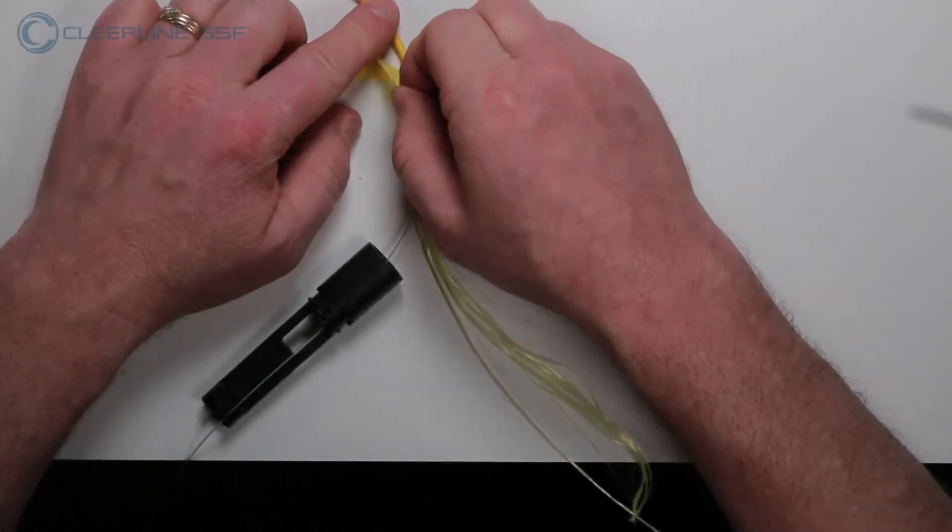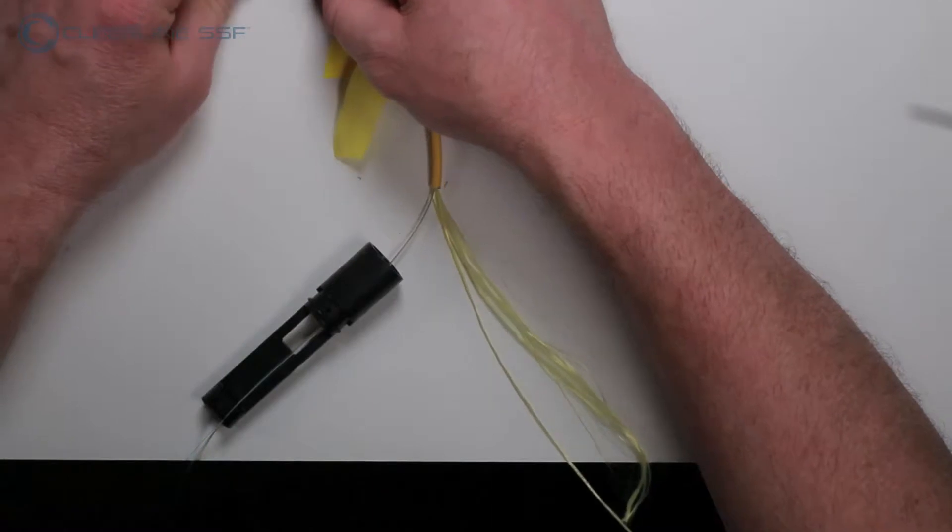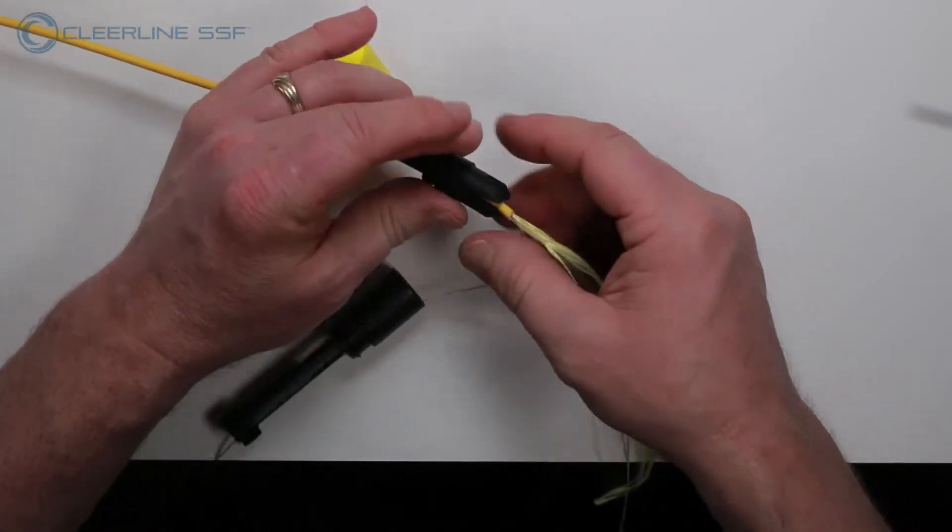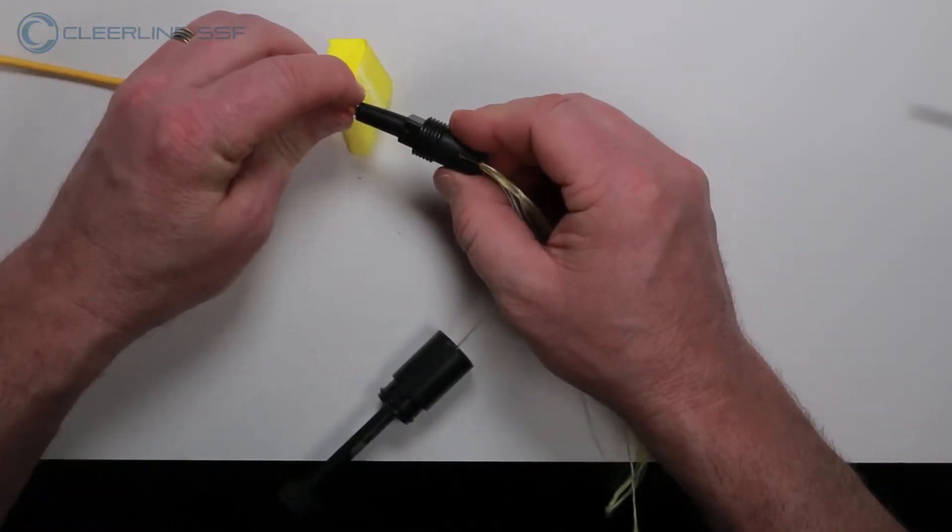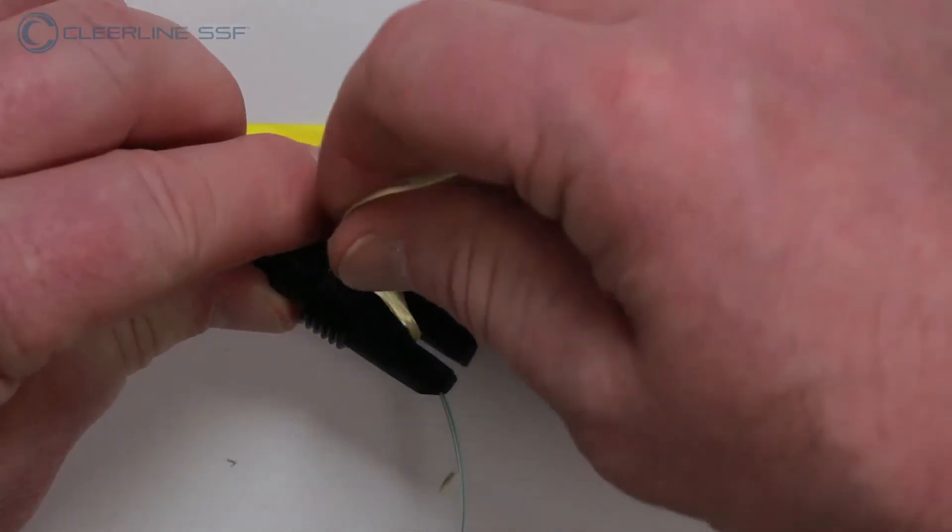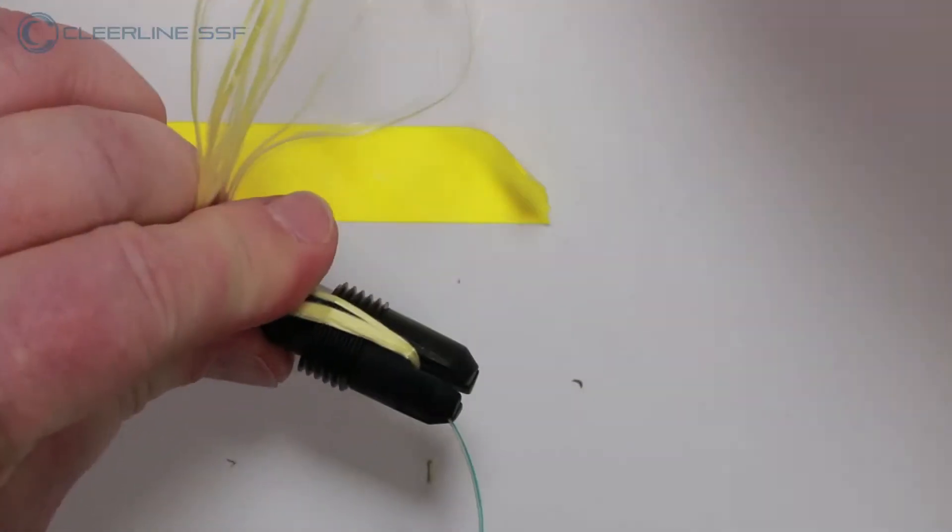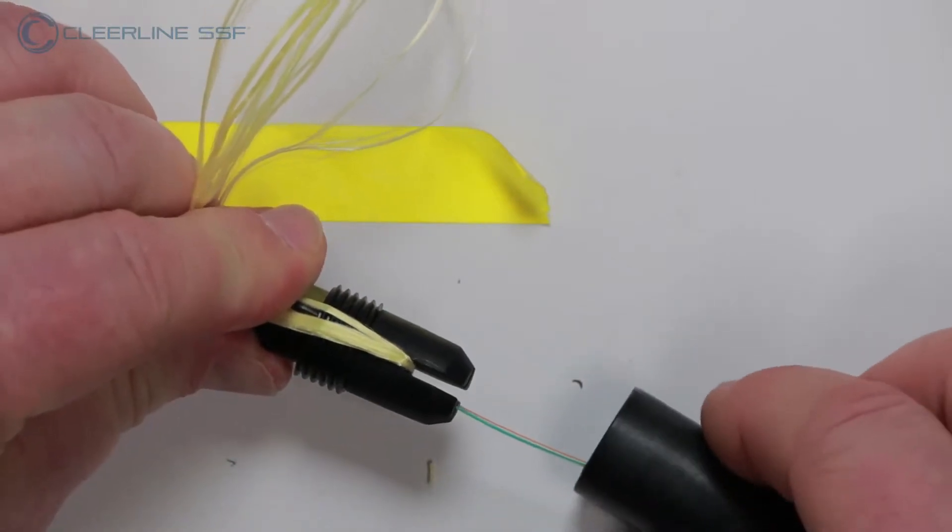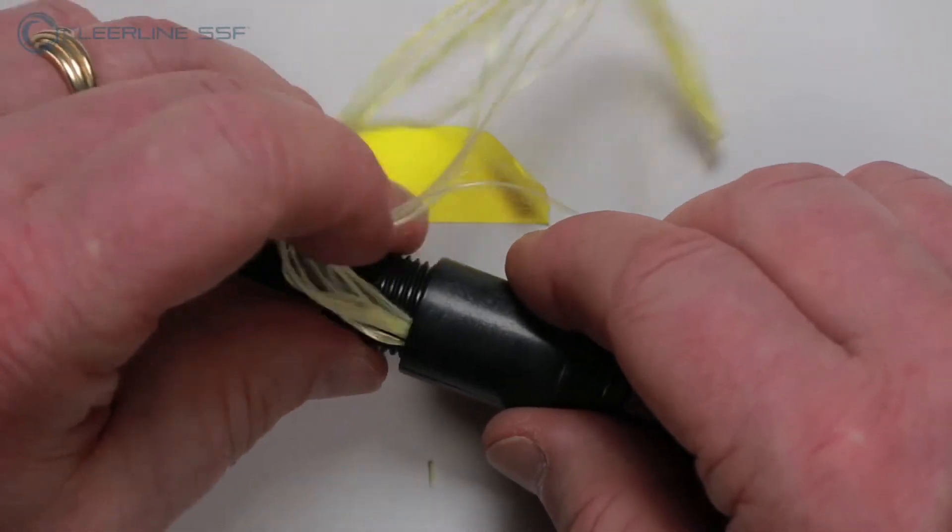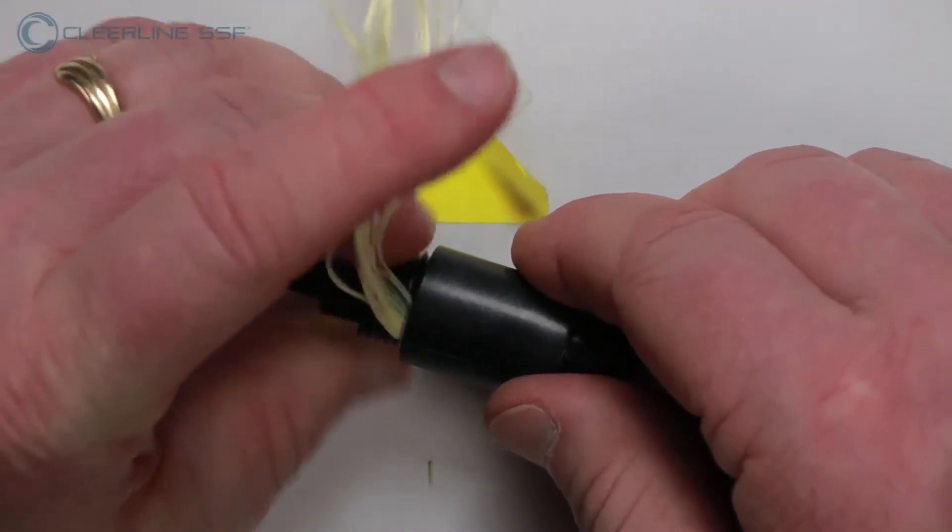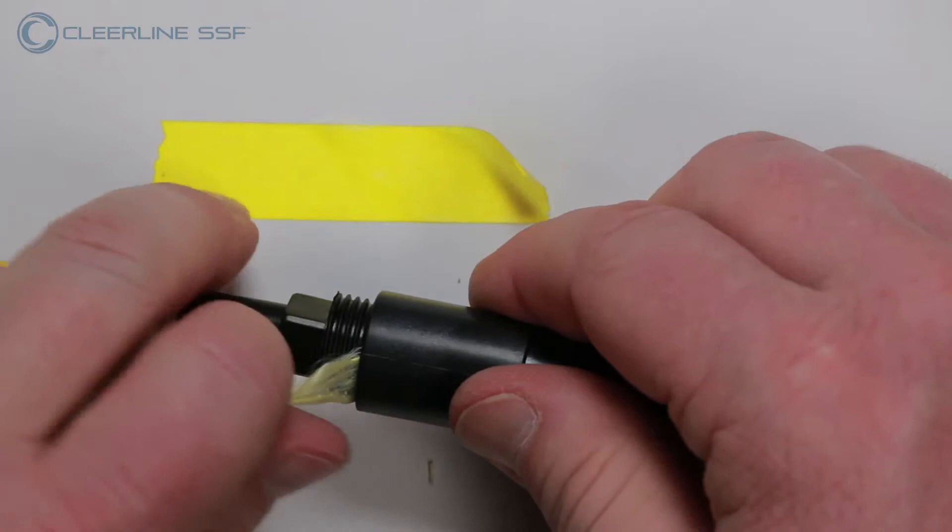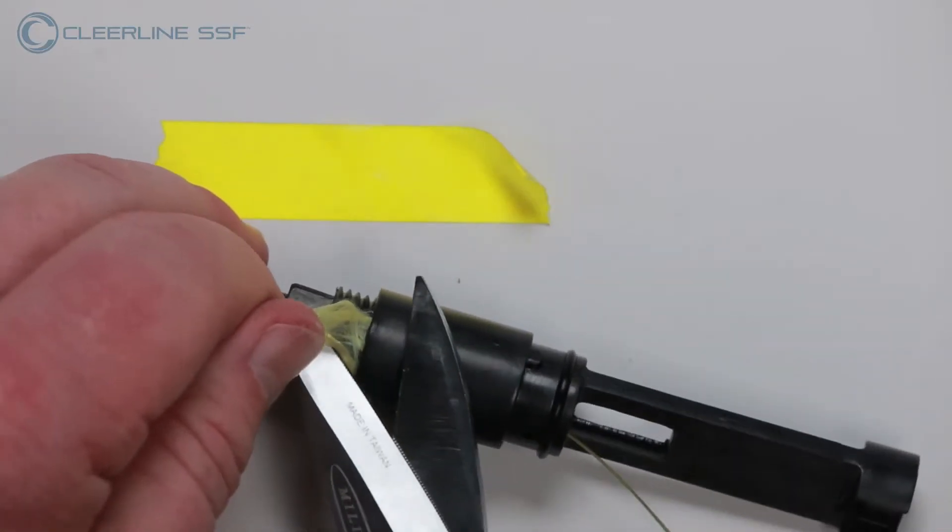Slide the grommet strain relief and nut forward on the jacket and position end of cable jacket even with the slits in the grommet strain boot. Position aramid yarns through one of the slits in the boot and hold yarns firmly back along the cable jacket. Bring the housing forward and tighten one full turn to lock in the yarns. Cut yarns closely to housing and tighten until secure.